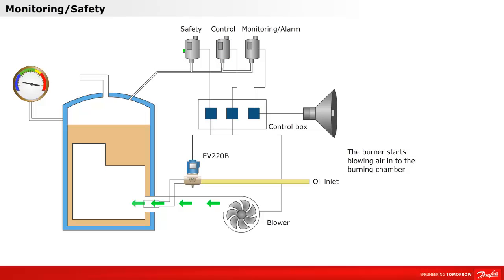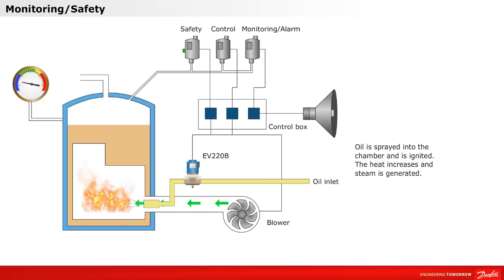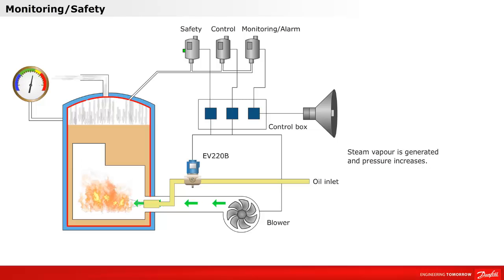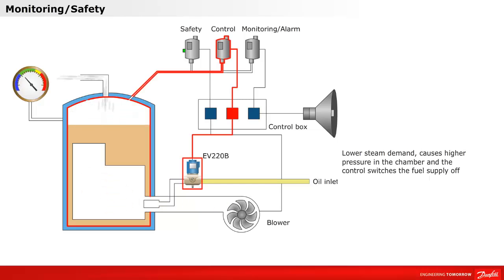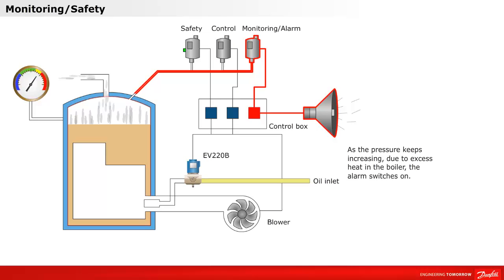Now let's take a look at an example of a typical monitoring and safety function application. The first steps are the same as with the control function example. The burner starts blowing air into the burning chamber. Oil is sprayed into the chamber and is ignited. The heat increases and steam is generated. Steam vapor is generated and the pressure increases. The lower steam demand causes higher pressure in the chamber and the control switches the fuel supply off. As the pressure keeps increasing due to excess heat in the boiler, the alarm switch is on.